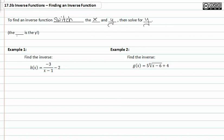And it's important to also note that f is technically like the y. In example one, we have f is equal to negative three over x minus one minus two.